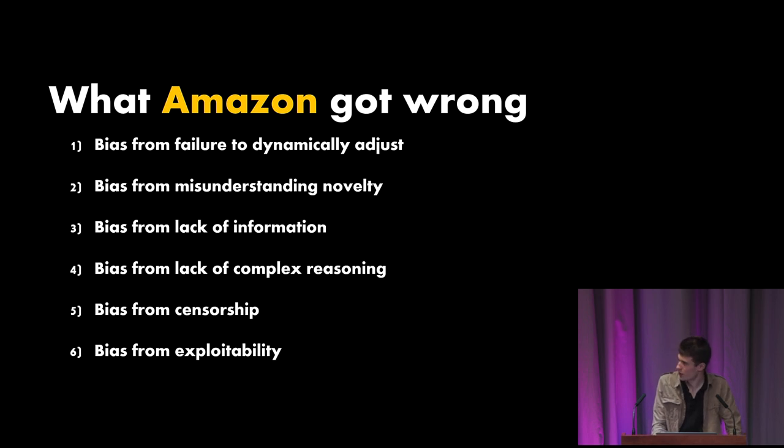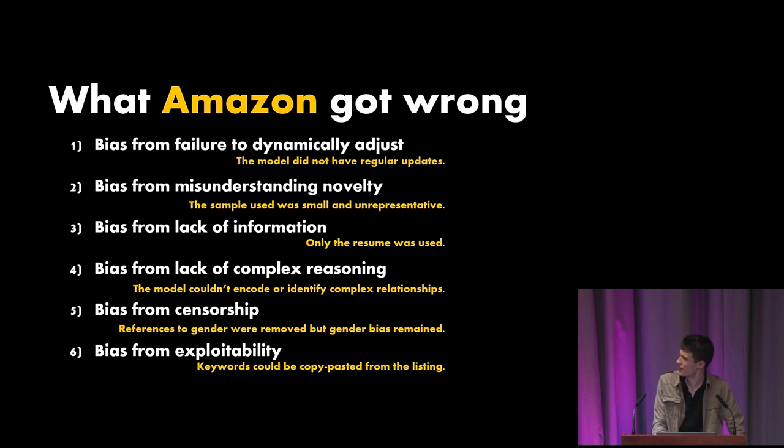In terms of what Amazon got wrong, it was basically everything. All of these things for various reasons they actually didn't take into account. For example, bias from lack of information—only the resume was used. They didn't take any holistic information. Bias from censorship—they attempted to remove references to gender and still found that they were biased.